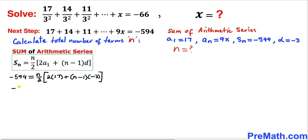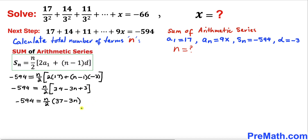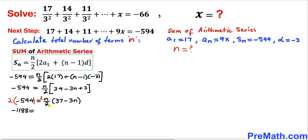Let's simplify further. We get negative 594 equals n divided by 2, times 34 plus, distributing negative 3, that gives us negative 3n plus 3. So 34 plus 3 gives us 37. Now let's remove the fraction by multiplying both sides by 2, giving us negative 1188 on the left hand side.